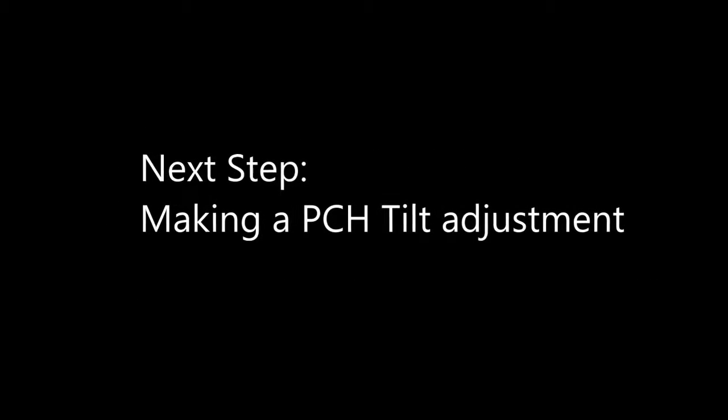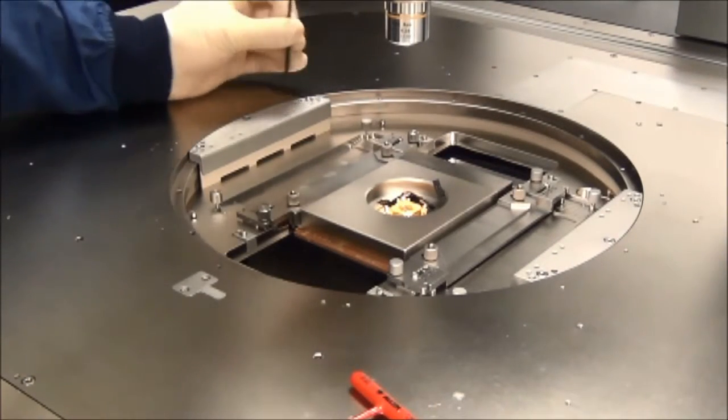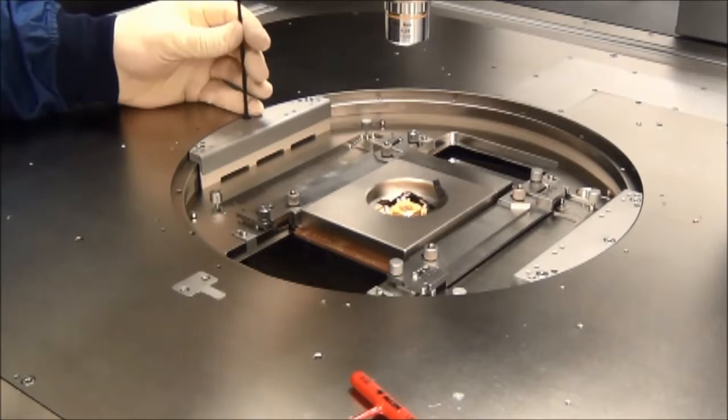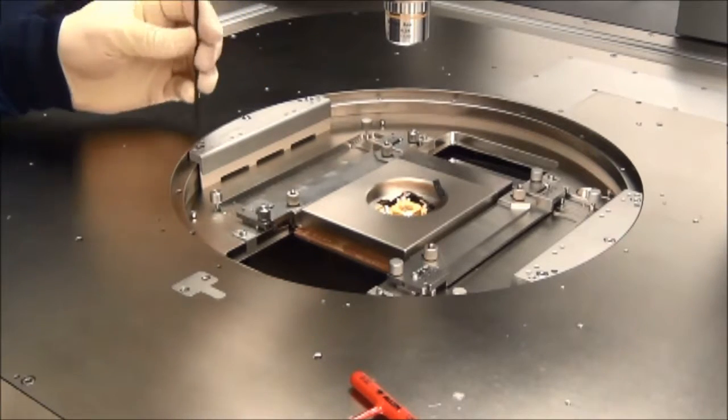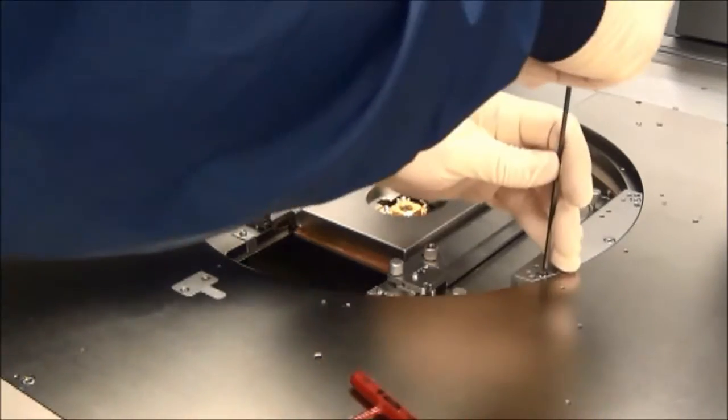To assess the tilt of the probe card holder, we installed the probe card with a known good probe array tilt and then contacted a bare aluminum wafer to assess the uniformity of our scrub marks. Using this technique, we have determined that the probe card holder planarity needs to be adjusted. To begin, loosen all six screws securing the outer rails to the platen.